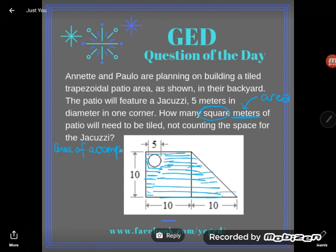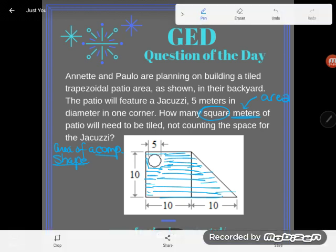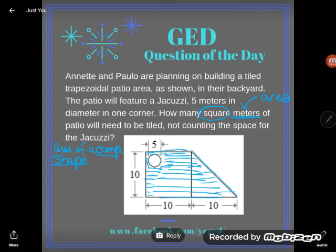What do I mean by a composite shape? Sometimes teachers call this a complex shape or a compound shape, but what I mean is that it's more than one shape put together. In this case, we have a trapezoid with a circle cut out of it.